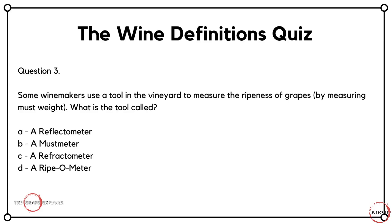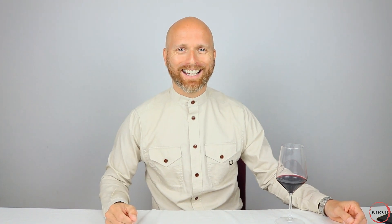Question three is an incredibly scientific and technical question. Some winemakers use a tool in the vineyard to measure the ripeness of grapes by measuring must weight. What is this tool called? Is it A, a reflectometer? Is it B, a must-meter? Is it C, a refractometer? Or is it D, a ripometer? The correct answer here is C — it's a refractometer.